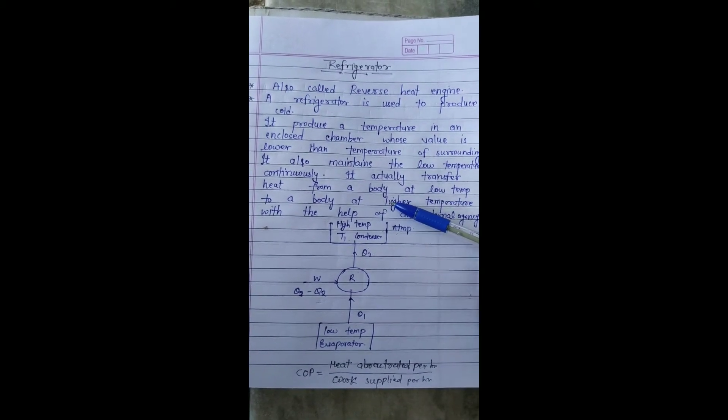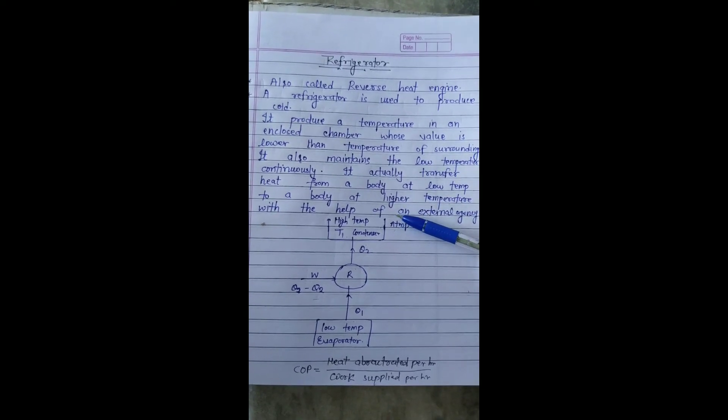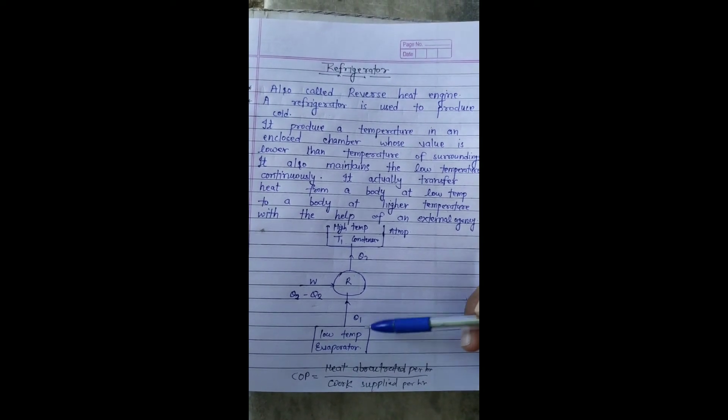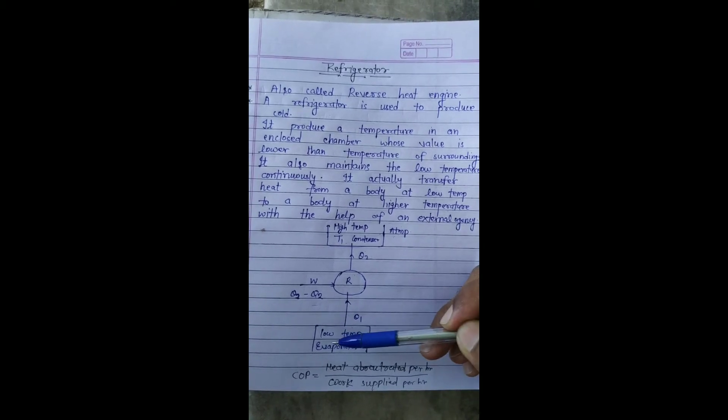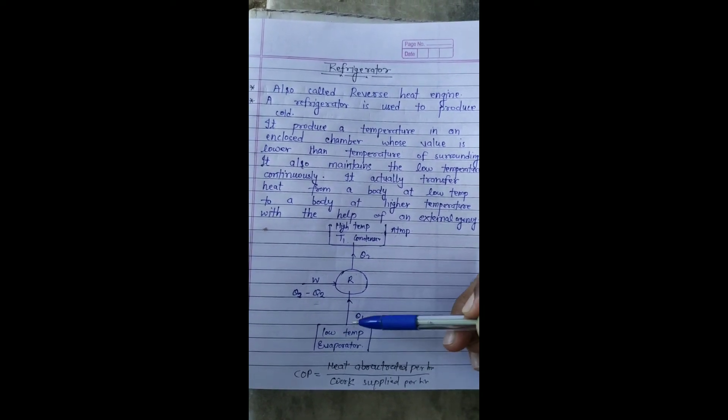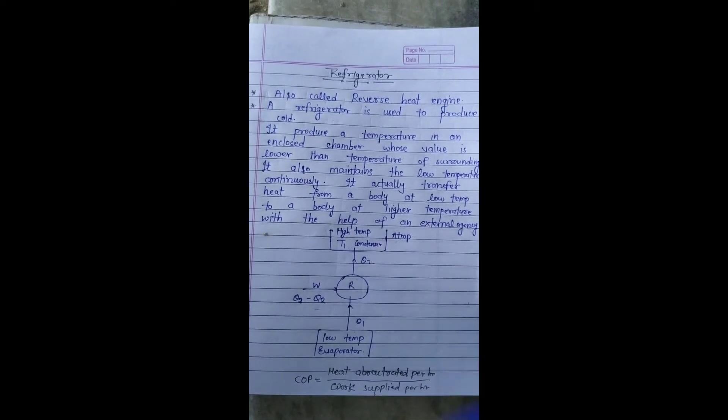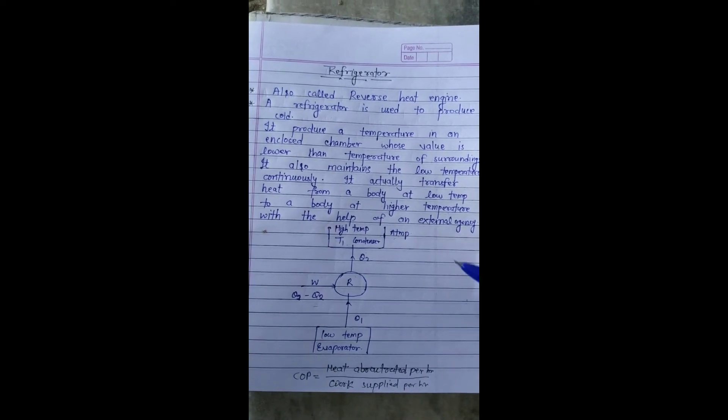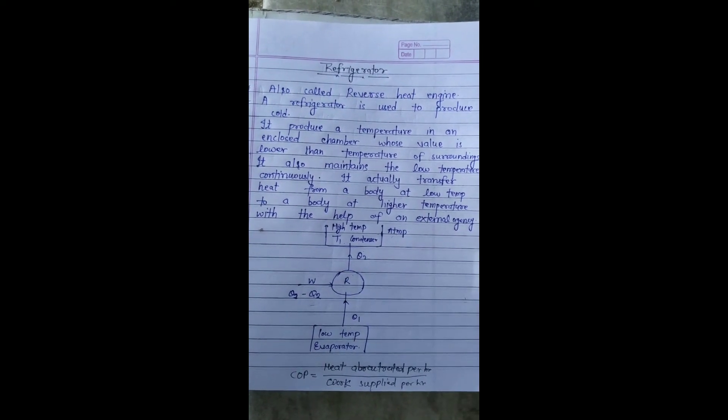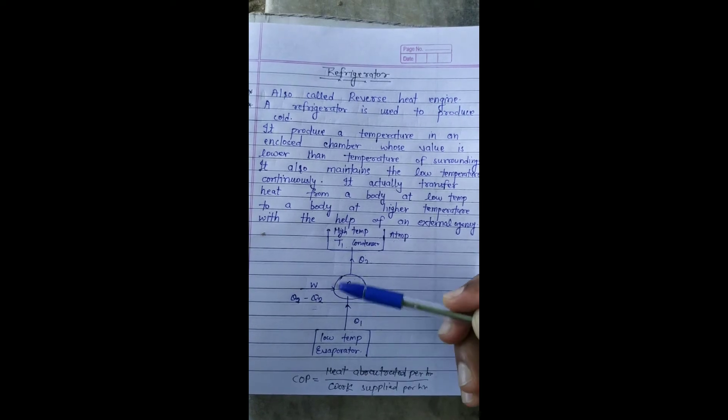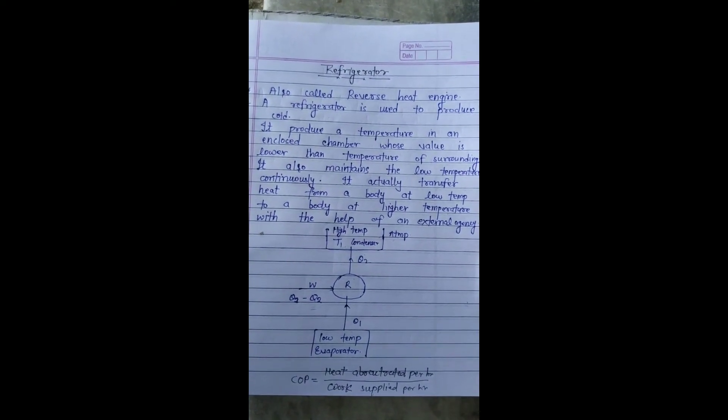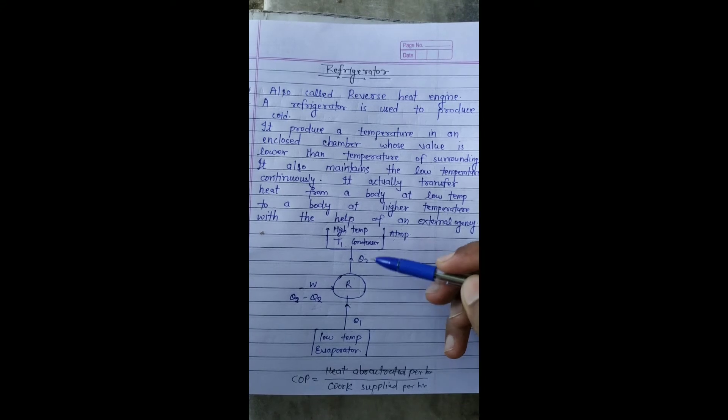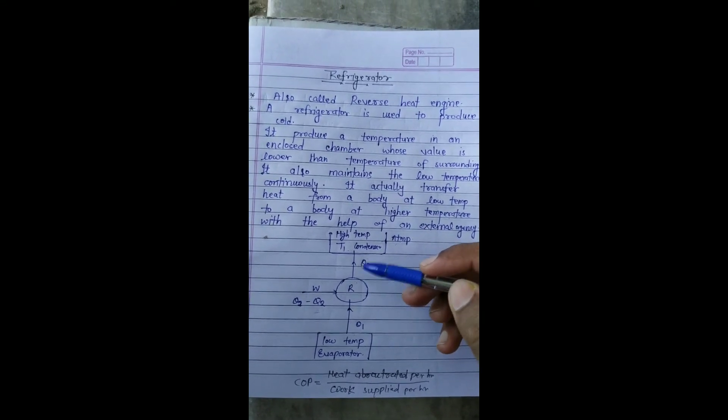It actually transfers heat from a body at lower temperature to a body at higher temperature with the help of an external work. What is this? We take the heat from a body at lower temperature to a body at higher temperature. That is why we have to work on the body at lower temperature. What is the temperature of the evaporator? It is a part of the evaporator. We take heat from here.